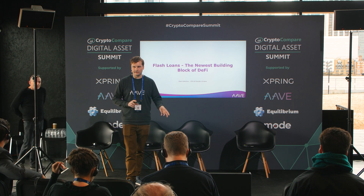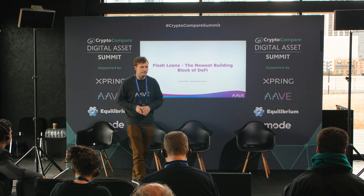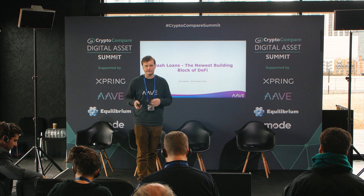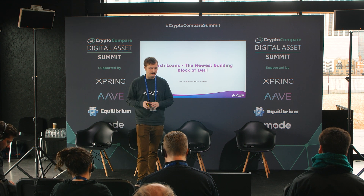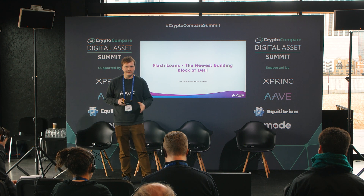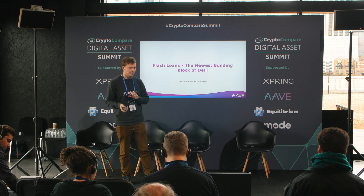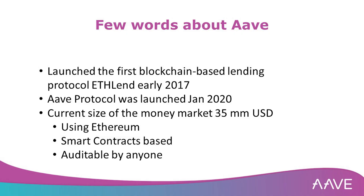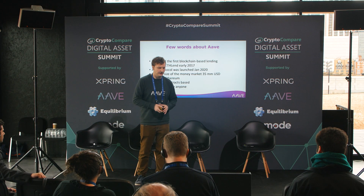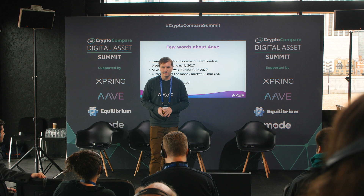Before going into details, a couple of things about Aave. We started with ETHLend a few years ago — we built an Ethereum-based lending protocol — and then we pivoted into Aave and launched about a month and a half ago. We now have a market size of 25 million in lending and borrowing on the Ethereum blockchain. Flash loans are the unique feature of our protocol compared to other lending protocols. Aave is smart contract-based, so all transactions including flash loans are fully auditable.